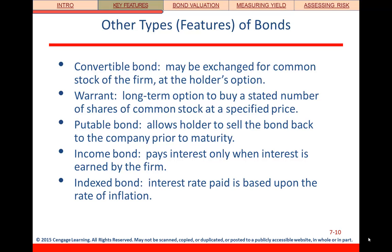An income bond is an interesting one: the issuer only has to make coupon payments when interest is earned by the firm. For example, if a municipality issues a bond to fund a toll road, they could specify that interest payments only come from the income generated by the toll road. If citizens decide not to drive that road and pay the toll, there's no income, and the bondholders are out of luck.